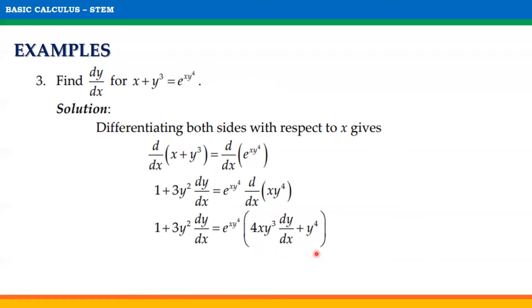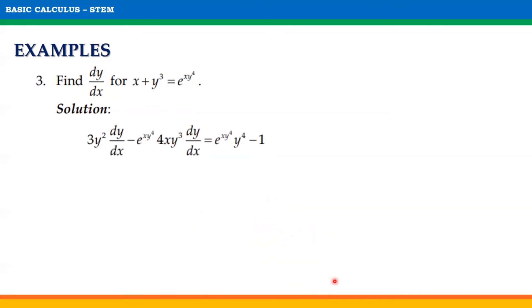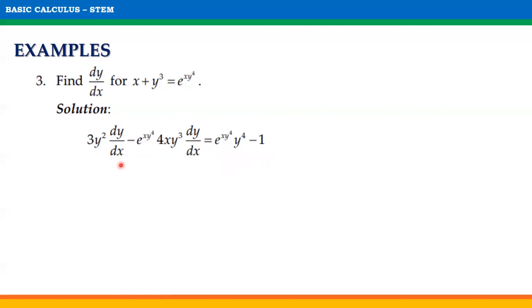Remember that we used the product rule here because xy⁴ forms a product. Let us distribute e^(xy⁴) on this binomial. Hence, we get 1 + 3y² dy/dx equals e^(xy⁴) · 4xy³ dy/dx + e^(xy⁴) · y⁴. Next, combine all terms that contain dy/dx on the left side of the equation. Thus, we will have 3y² dy/dx minus e^(xy⁴) · 4xy³ dy/dx equals e^(xy⁴) · y⁴ minus 1.